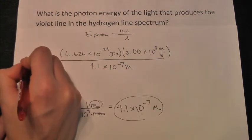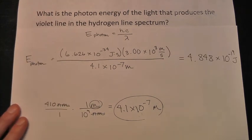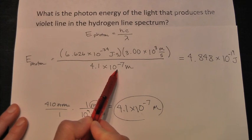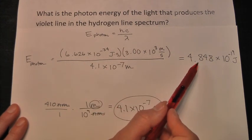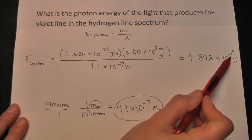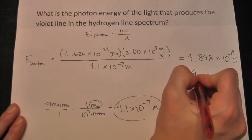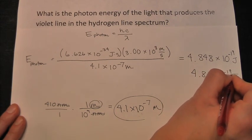This should equal the energy of that photon. I do the math on this problem. Multiplying these and dividing by 4.1 times 10 to the negative seventh. And I get my energy. 4.848 times 10 to the negative 19th joules. What about significant figures? For significant figures, we need to keep it to 4.8 times 10 to the negative 19th joules.